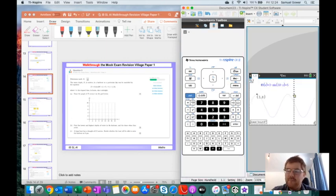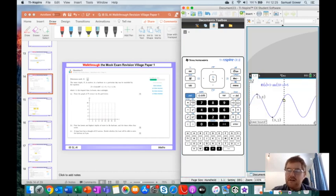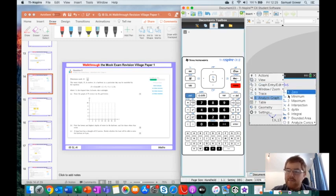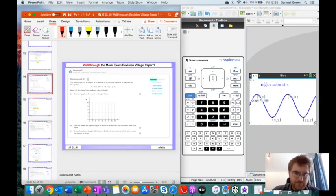We're going to start from 0,5. Then use the analyze graph maximum minimum functions. Click before the maximum, after the maximum, and read off these maximum points. Do the same with minimum: analyze graph, minimum, click before, click after. Want to find this maximum: menu, analyze graph, maximum, click before, click after, and the last minimum: menu, analyze graph, minimum, click before, click after.